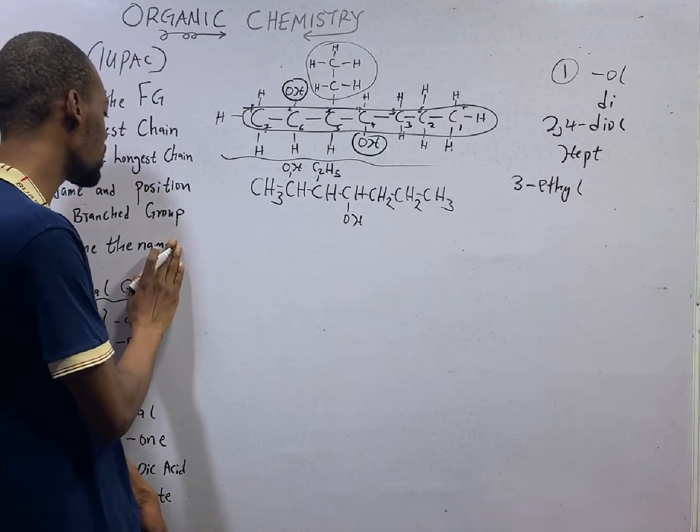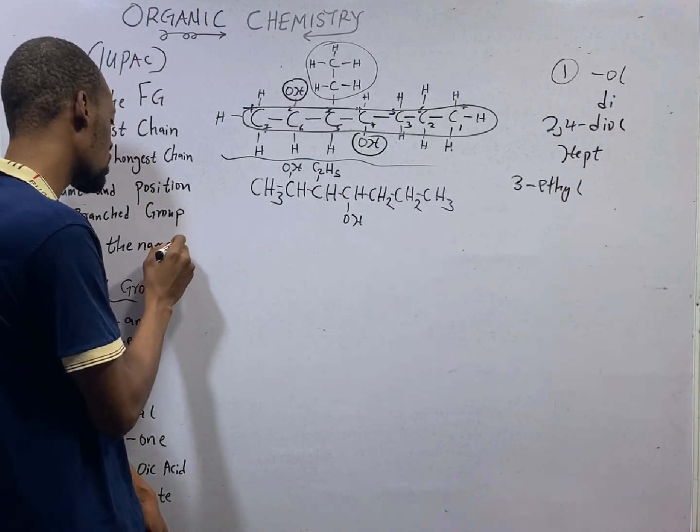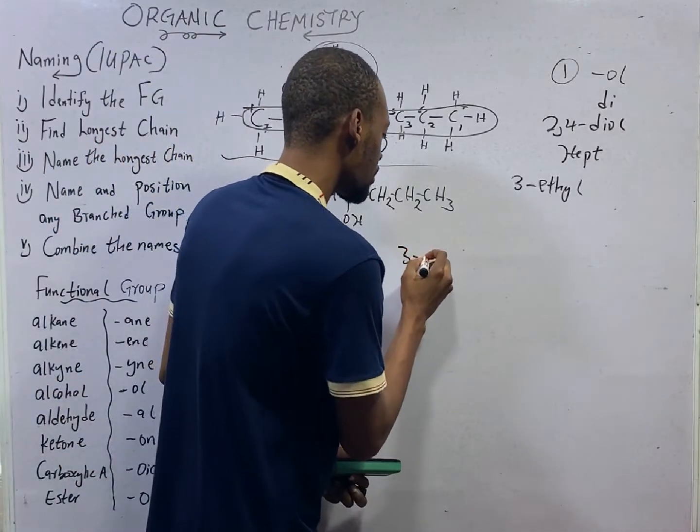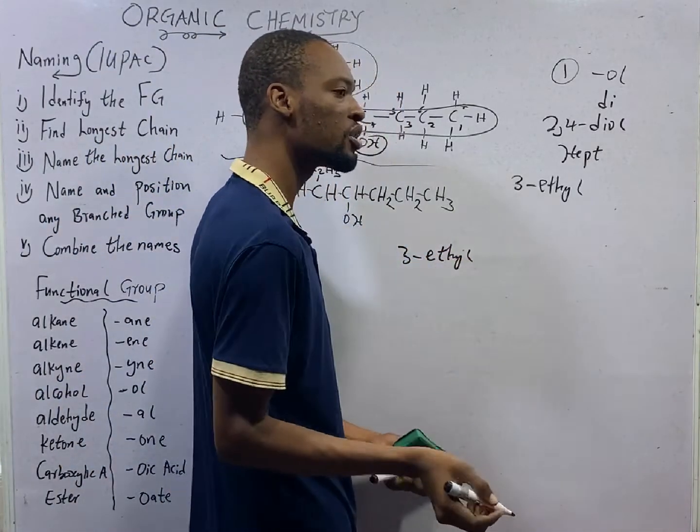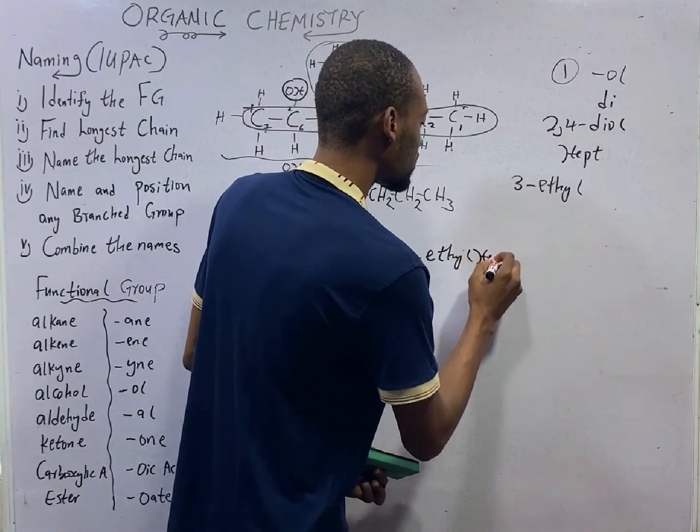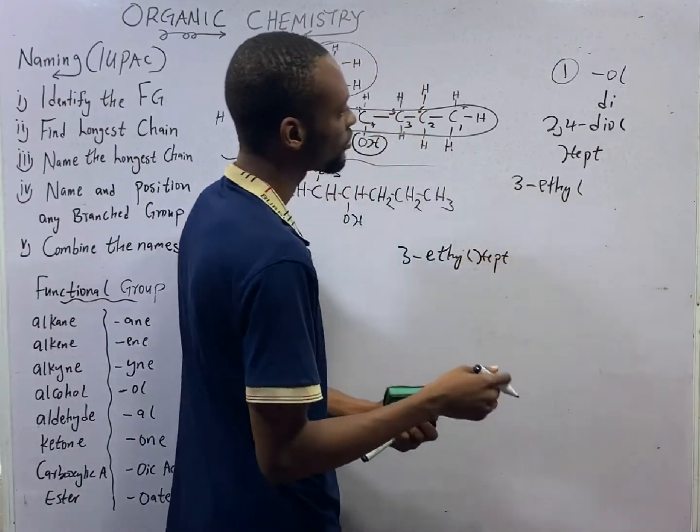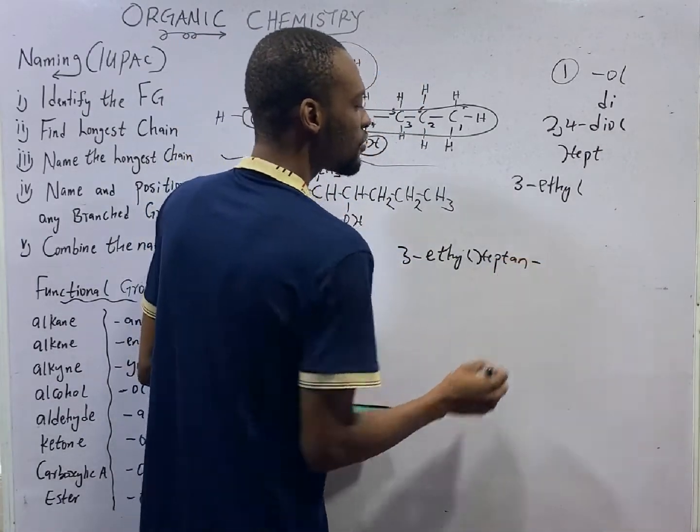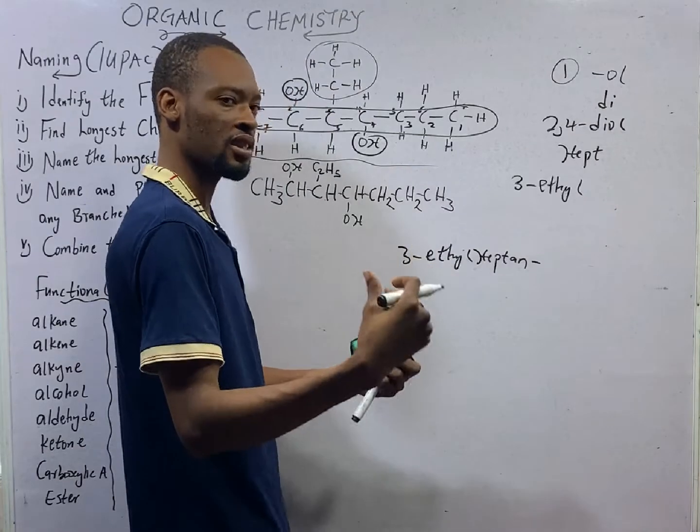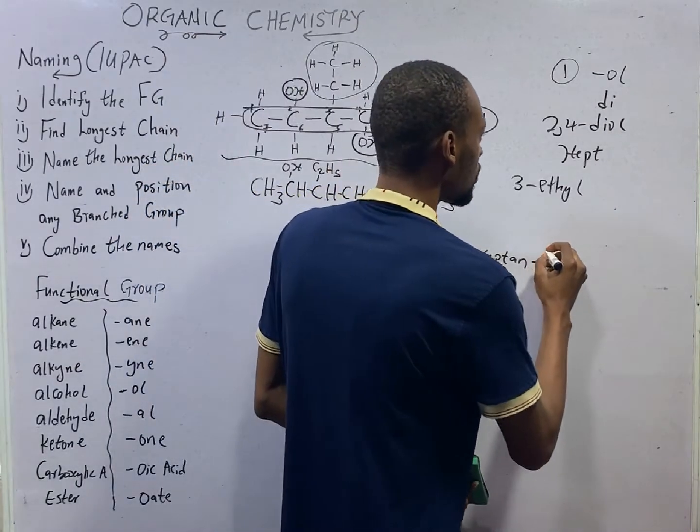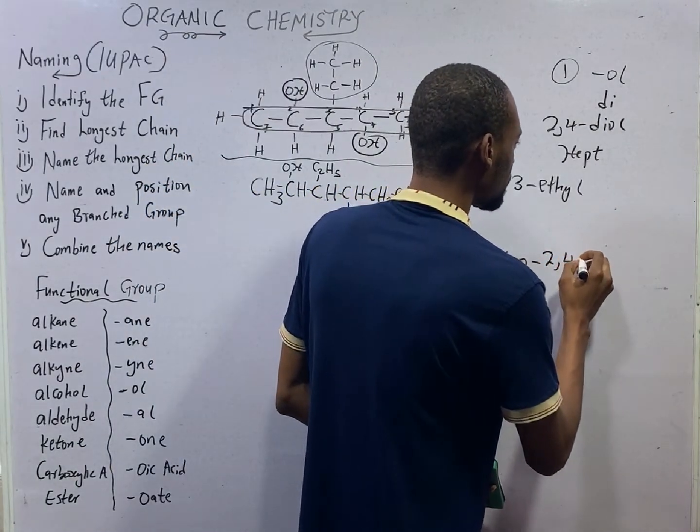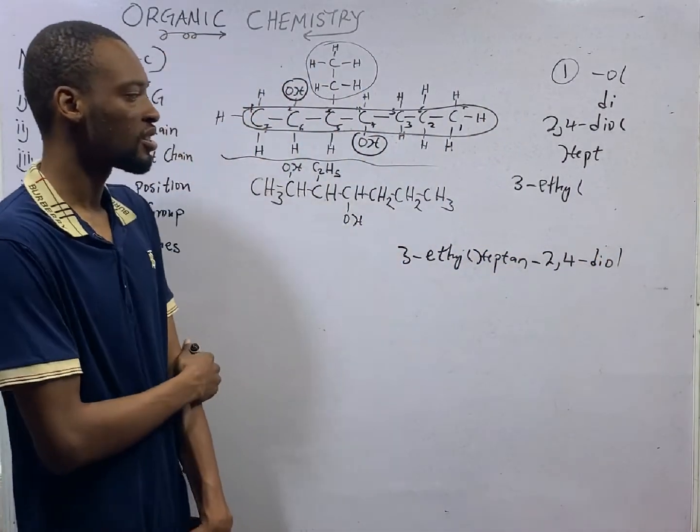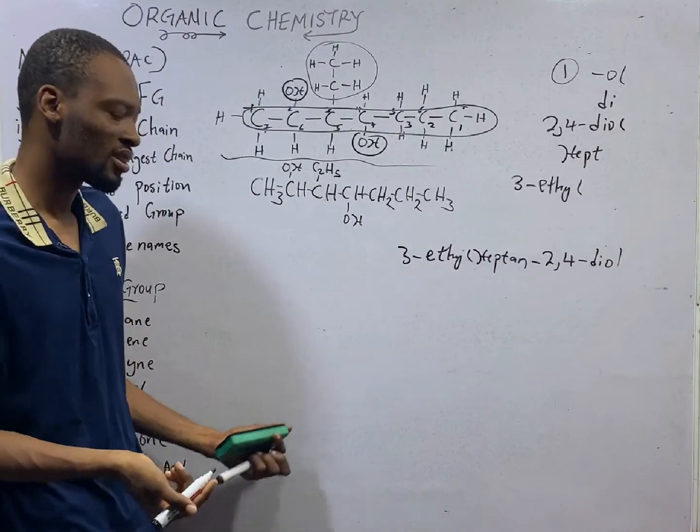Let's combine the names. The first thing that will come is the branch, that is 3-ethyl. Followed by the root name. This is heptan, HEPT, or you complete it to be heptan. Then the functional group will be the last, the suffix. And that is 2,4-diol. So, 3-ethyl-hept-2,4-diol. That is it.